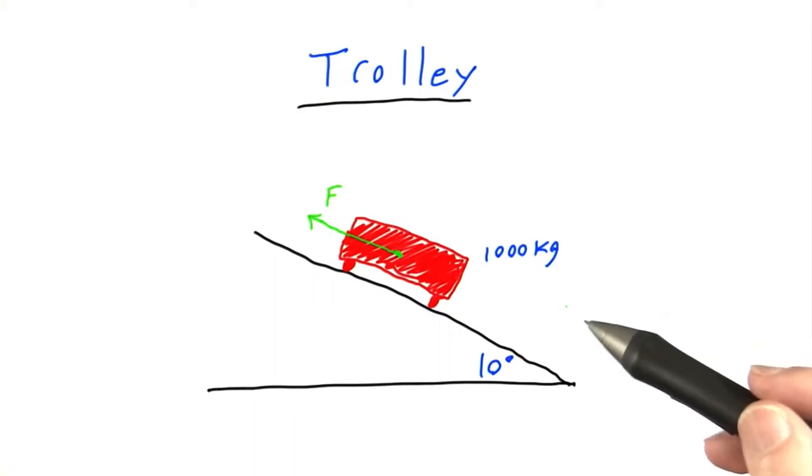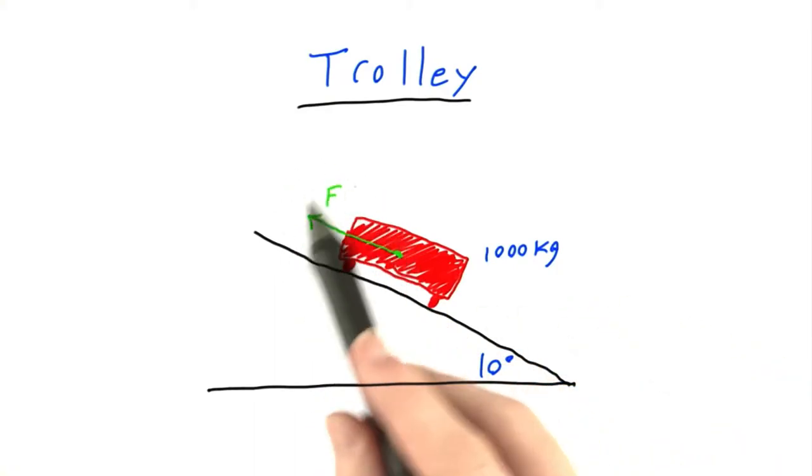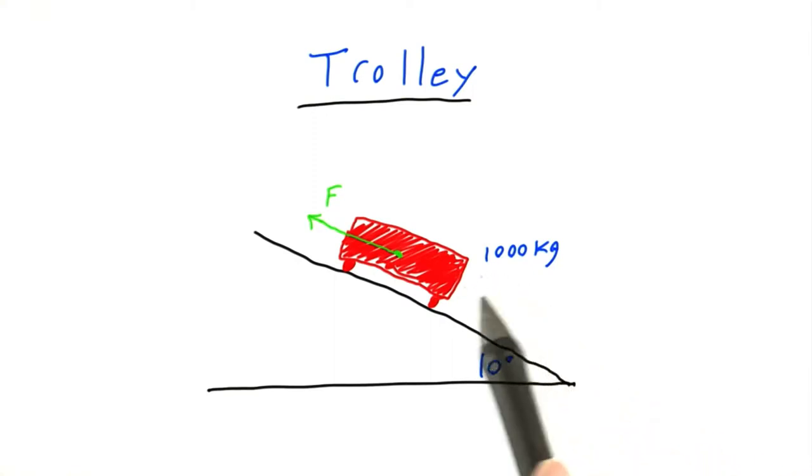In this problem, we were tasked with figuring out how strong this force F has to be to keep this trolley, which has a mass of 1,000 kilograms, moving at a constant rate up this incline of 10 degrees.